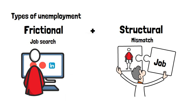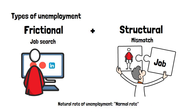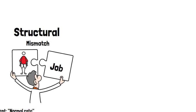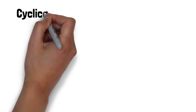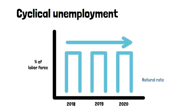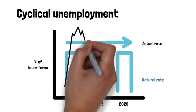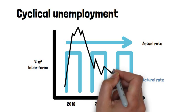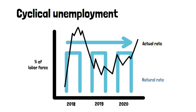Adding up frictional and structural unemployment gives us the natural rate of unemployment in an economy. The natural rate of unemployment changes slowly, but the actual rate of unemployment fluctuates constantly as a result of economic growth being slow or fast. This deviation from the natural rate is called cyclical unemployment.